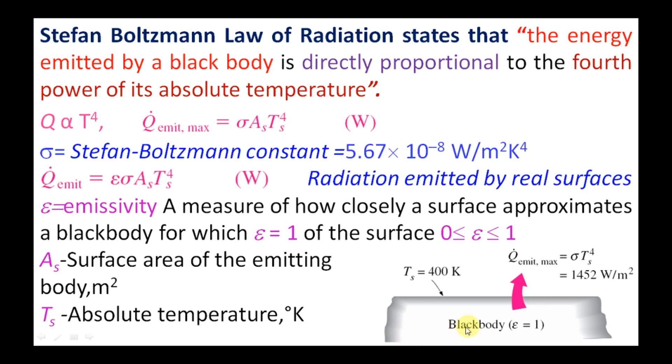And here we can see that it is a black body which is emitting heat. And for that, the temperature is about 400 Kelvin surface temperature. Then Q_emit,max we can write as σT_s⁴. The surface area is taken as unit and ε is taken as 1.